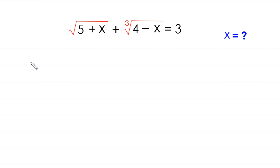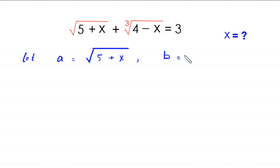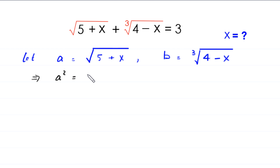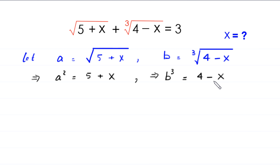First, we suppose that a is equal to square root of 5 plus x, and b is equal to cube root of 4 minus x. If we take a square of both sides of the first equation, this implies that a squared is equal to 5 plus x. And if we take a cube of both sides of the second equation, this implies that b cubed is equal to 4 minus x.